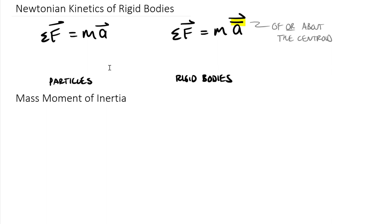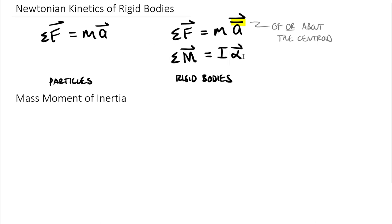There is a second equation we need because of rotation. The first equation takes care of translation. The rotational equation gives us the sum of moments as a vector. In statics this equals zero; in dynamics it equals I times alpha, where alpha is the vector. We don't need an alpha-bar here because alpha is constant for an entire rotating body.